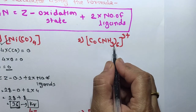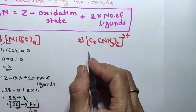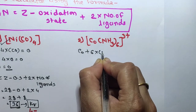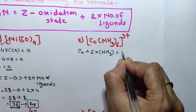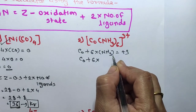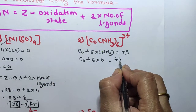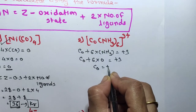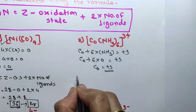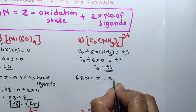Next, let's solve Co(NH₃)₆³⁺. First step: find cobalt's oxidation state. Cobalt plus 6 into NH₃ — NH₃ is a neutral ligand with oxidation state zero — equals plus 3. Therefore cobalt's oxidation state is plus 3. Now find the effective atomic number: EAN is equal to Z minus oxidation state plus 2 into number of ligands.